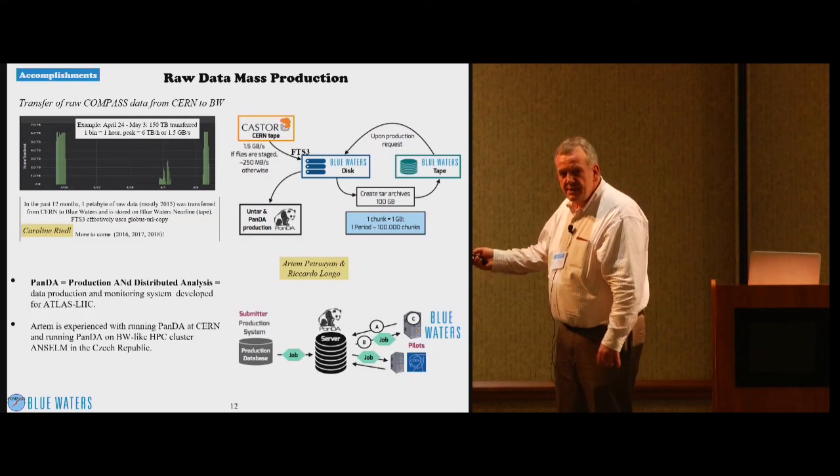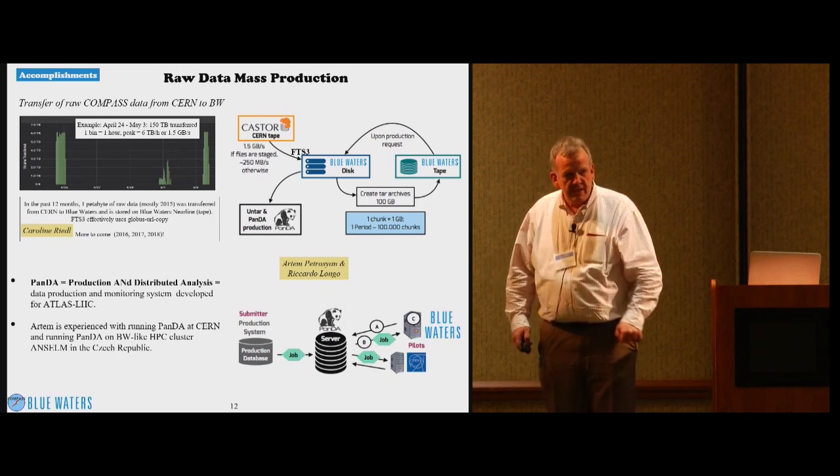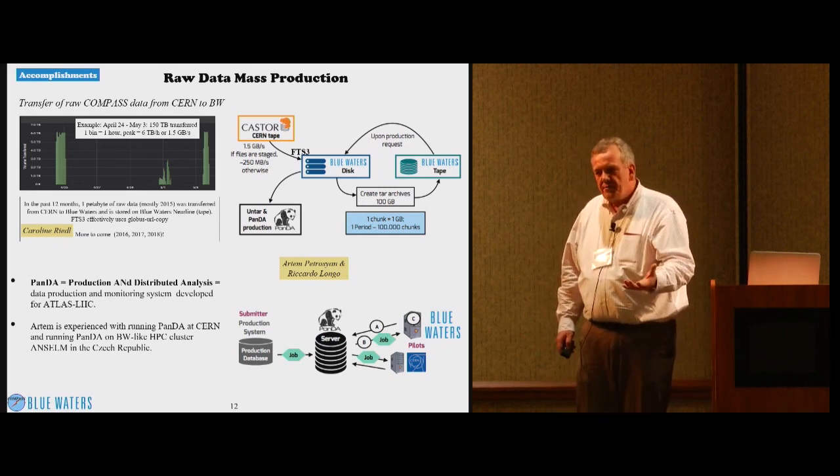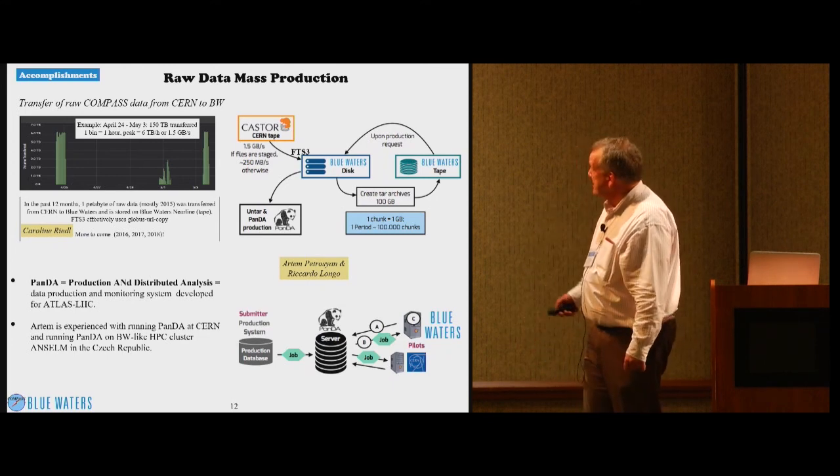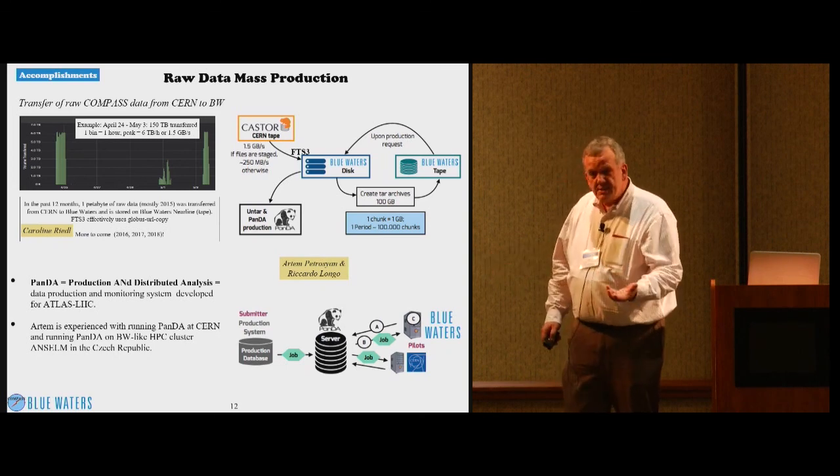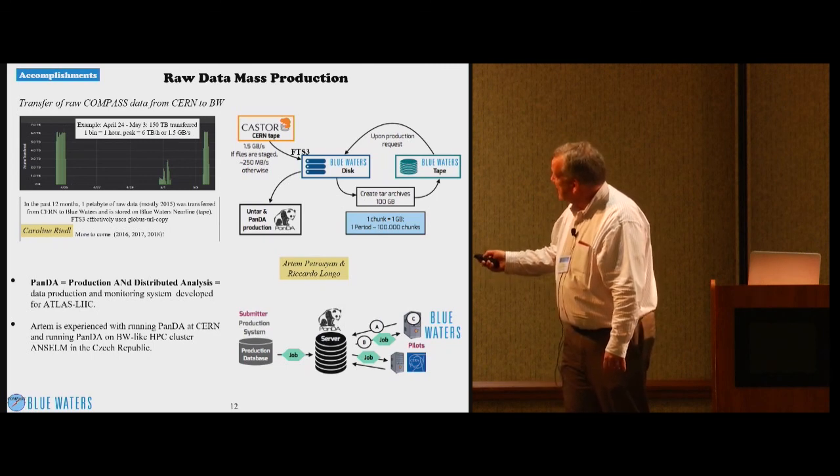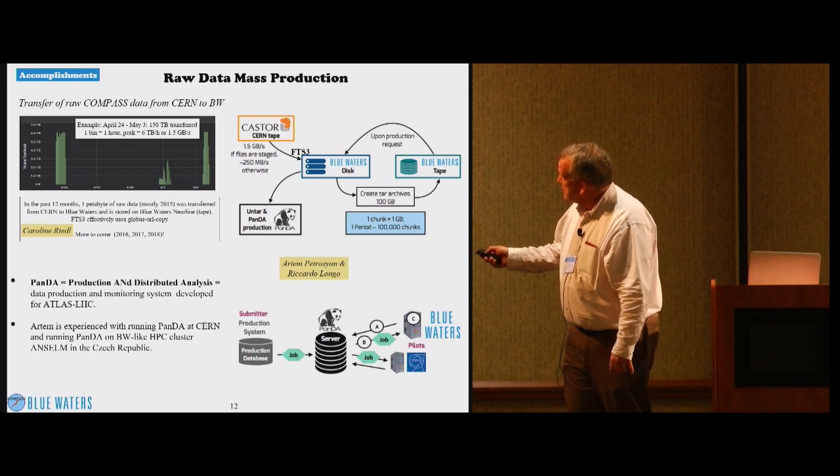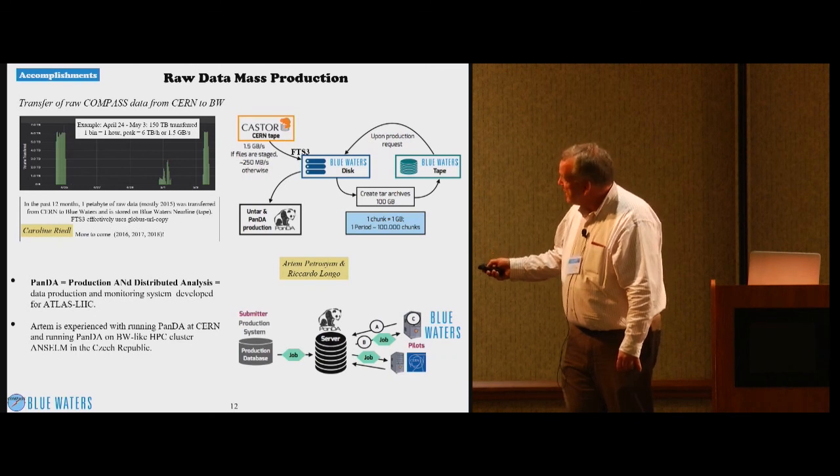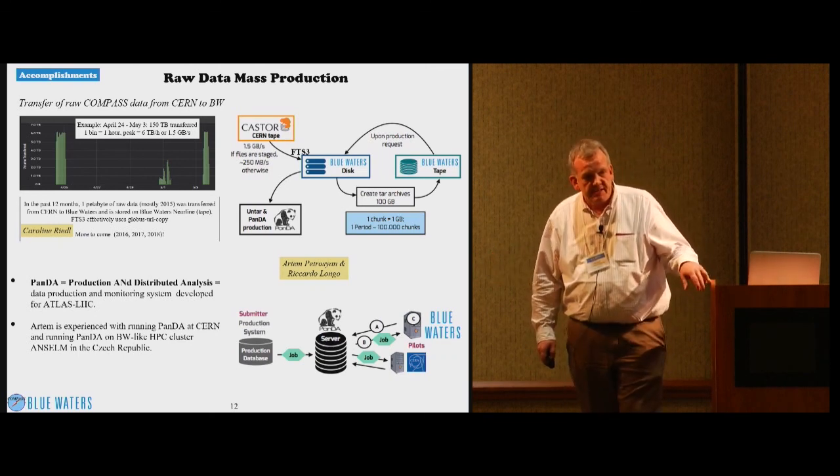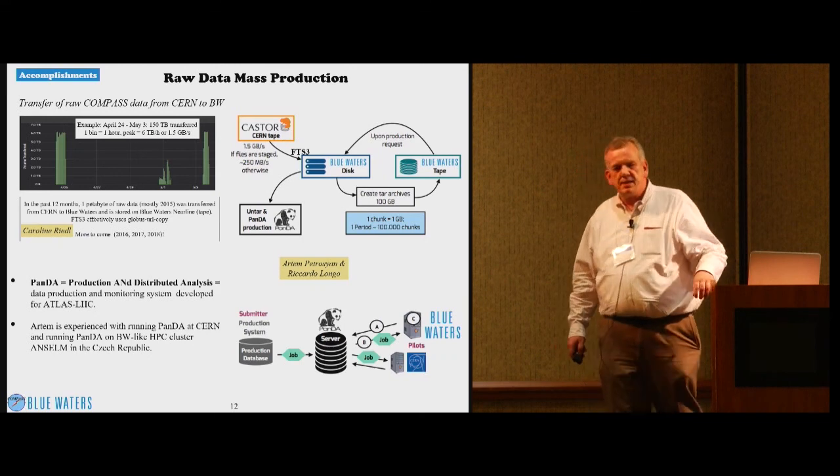So then some of the accomplishments. The first item which is critical and needs to be looked at is the data transfer from CERN. We have one petabyte basically to move in both directions. It can be two petabytes in certain years. This was studied already with exploratory allocations that we had in previous years. And it basically turns out the data at CERN are at Castor, this is tape storage, but of course there are staging disks. If the data is staged on disk, we can reach 1.5 gigabytes per second sustained. If we copy from tape and send to Urbana, then we have 250 megabytes per second.